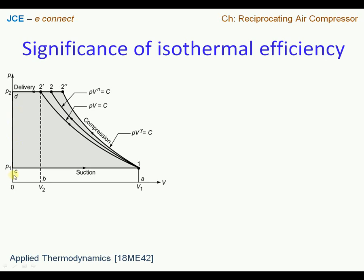As shown here, we are familiar with the operation of air compressor. We have three processes shown on a PV diagram. Process C2 to 1 signifies the suction process, process 1 to 2 signifies the compression process, followed by a delivery process. The expansion process is not shown. The process of our interest here is the compression process because it directly reflects on the work done on the compressor.